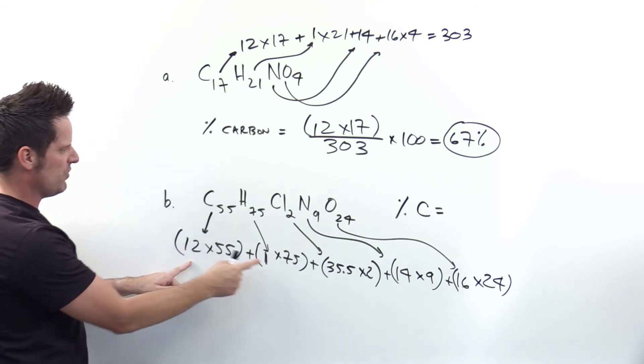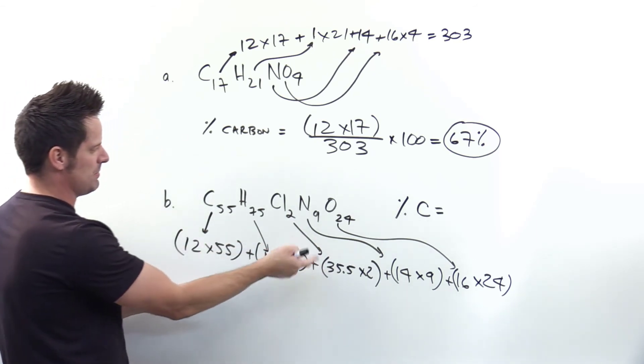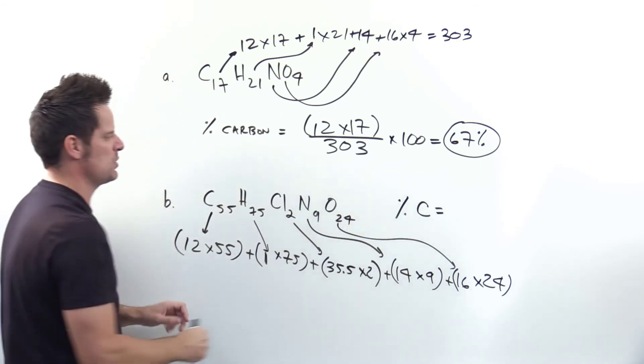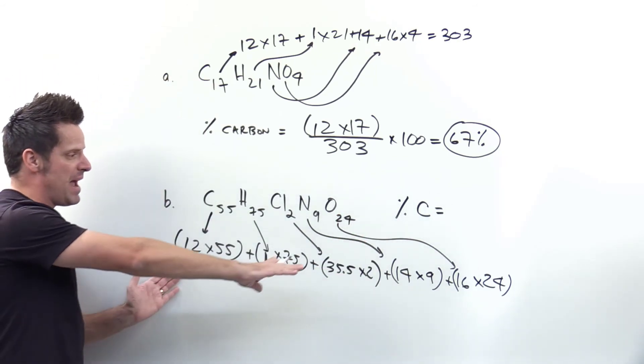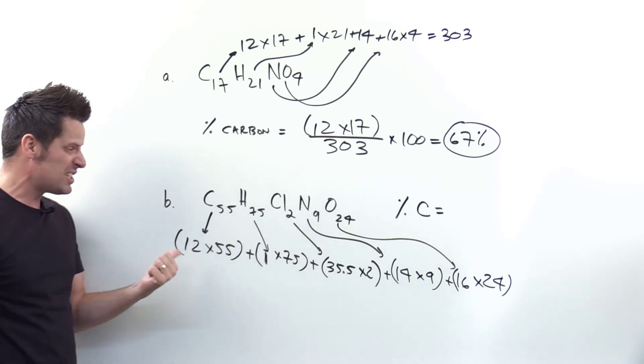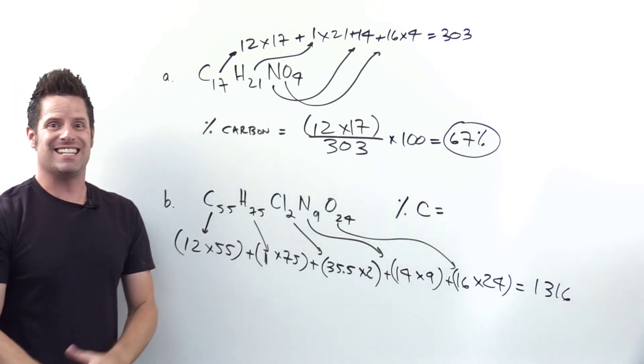So 12 times 55, 1 times 75, 35.5 times 2, 14 times 9 for the nitrogen and 16 times 24 for the oxygen. Wow that's a really big formula. Anyway you do all the math on that you end up getting a molecular weight for this molecule of 1,316.